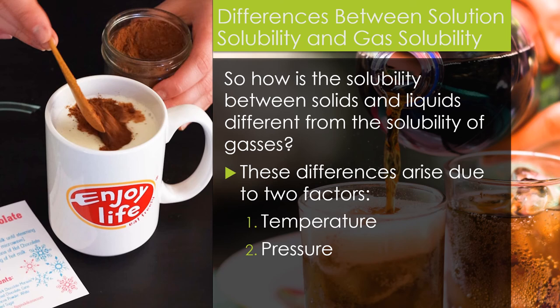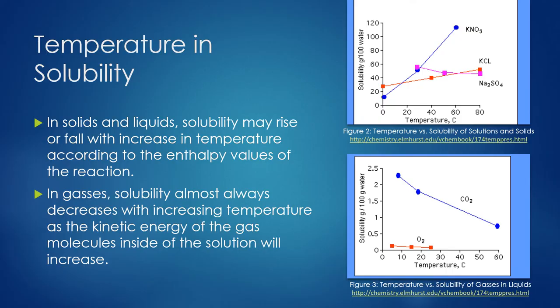We have learned earlier in the semester various methods to calculate the solubility of solids into liquids and aqueous solutions, but what makes gases so different? How is the dissolving of something like hot chocolate powder different from the dissolving of carbon dioxide into a carbonated drink? Well, there are two factors which contribute to these differences, and these are temperature and pressure.